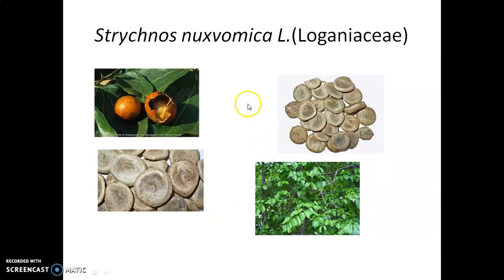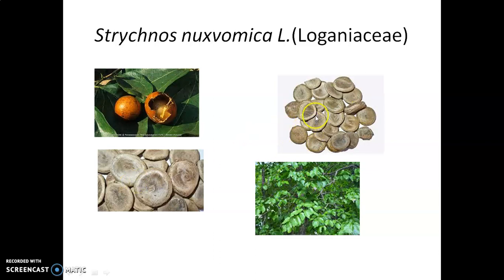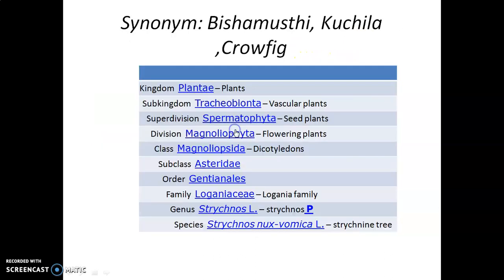Strychnos Nux Vomica is basically a seed-containing drug. Here you can see the fruit of Nux Vomica, the plant of Nux Vomica, and the seeds of Nux Vomica. It belongs to family Loganiaceae. The synonyms of Nux Vomica are Vishamushthi (meaning a handful of poison), Kuchila, and Krofid.